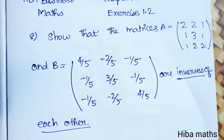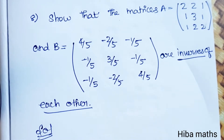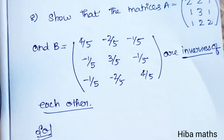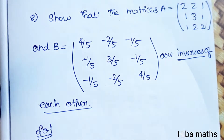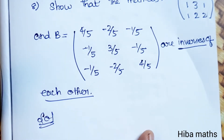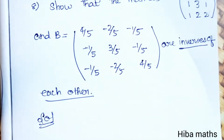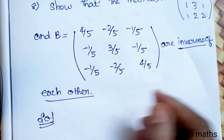To prove A and B are inverses of each other, we need A into B equal to I and B into A equal to I — that is the identity matrix [1 0 0; 0 1 0; 0 0 1]. If both conditions are satisfied, then A and B are inverses of each other.